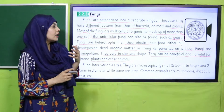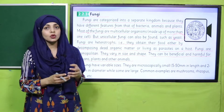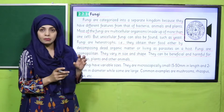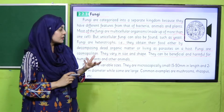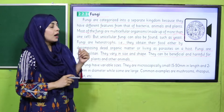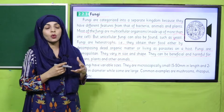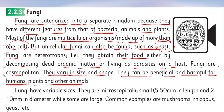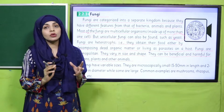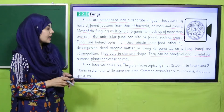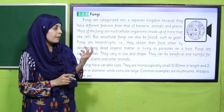Fungi are heterotrophs, meaning they cannot make their own food. They get it either by decomposing dead matter, living as parasites on a host, or feeding on organic material. Unlike autotrophs like plants that make their own food, fungi depend on external sources. Fungi are cosmopolitan, meaning they can survive anywhere in any environment. They also vary in shape and size and can be beneficial or harmful — if they are parasites, they are obviously harmful.